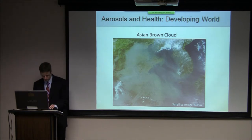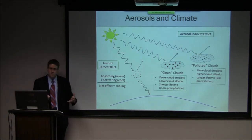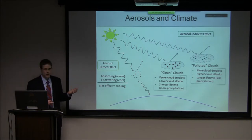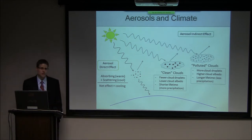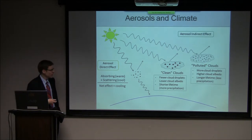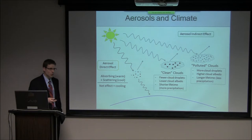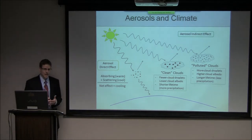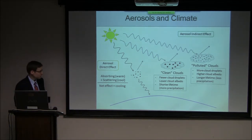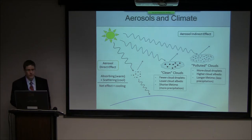Aerosols affect climate predominantly through two mechanisms. The first is because particles directly interact with solar radiation — the aerosol direct effect. Some particles, such as black carbon (also called elemental carbon or soot), absorb solar radiation, imparting a net warming effect on the climate. Other particles, such as ammonium sulfate and certain organics, scatter solar radiation, imparting a net cooling effect. Due to the abundance of different aerosol types, the aerosol direct effect has a net cooling effect on the climate overall.